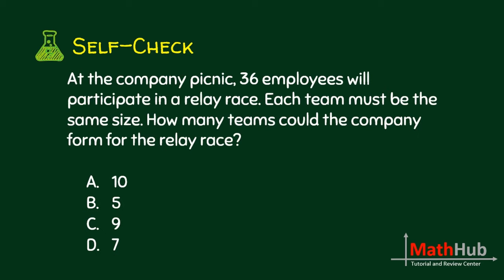At the company picnic, 36 employees will participate in a relay race. Each team must be the same size. How many teams could the company form? Again, this is a matter of checking which of the given numbers divides 36. The answer is letter C.